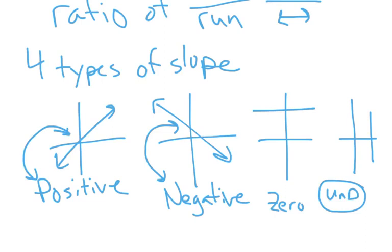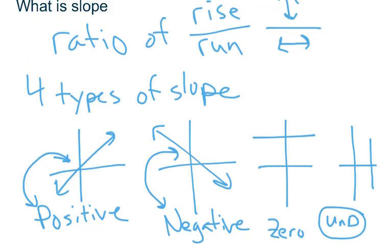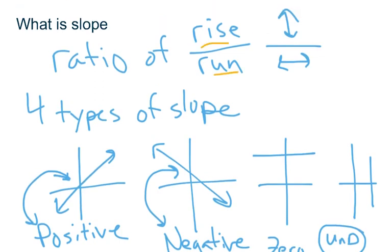Now let's talk about why a zero slope is zero and an undefined slope is undefined. It goes back to that ratio — rise over run, how far something's going up and down versus left and right. For a horizontal line, it's going up or down zero. Divided by whatever run, zero divided by anything equals zero. That's why we call it a zero slope.